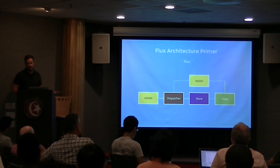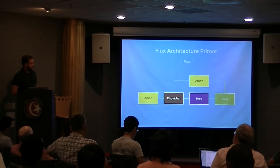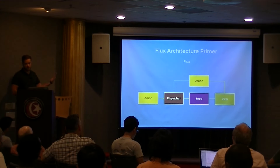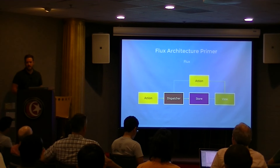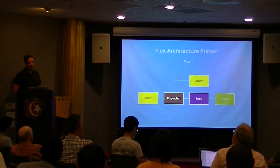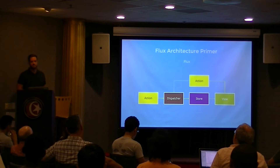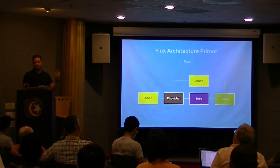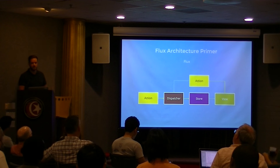With Flux, it kind of turns that concept on end. You've got a single store for all of your data, and the big thing with Flux is it's a single-way data flow. Your views get data from this single store, and views can't actually mutate data in the store directly. The only way they can mutate data is by dispatching an action — an object that has a type and maybe a payload. And then your store knows how to handle that action. The dispatcher acts like an air traffic controller, sending actions to your store.